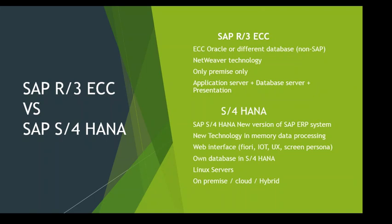There was a database server running Oracle or different databases, an application server which was the SAP application server, and a presentation layer which was GUI, web-based, or mobile-based access. These three tiers together were called R3, and everything had to be on-premise — companies had to install and manage their own servers.